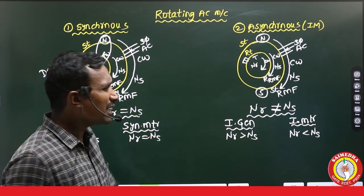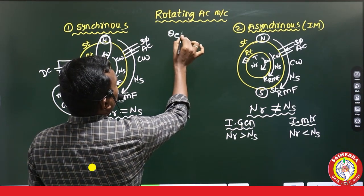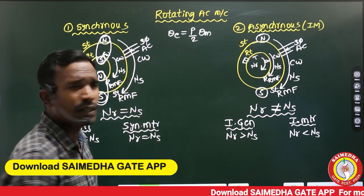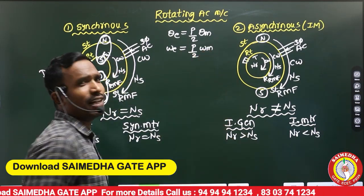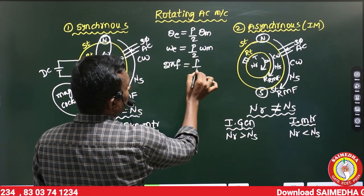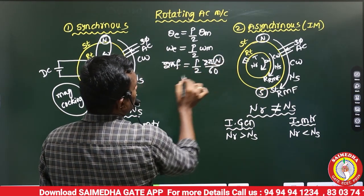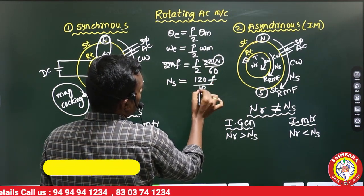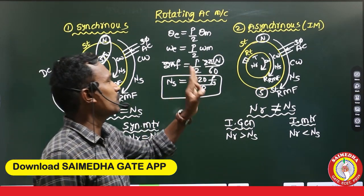What is synchronous speed actually? It is the speed of the stator magnetic field. How do we calculate synchronous speed? We have the basic formula: theta_electrical equals (P/2) times theta_mechanical. Writing in omega: omega_electrical equals (P/2) times omega_mechanical. So 2πf equals (P/2) times (2πN/60). The 2π cancels, and solving for speed: Ns equals 120f divided by P. Here, f is the stator supply frequency and Ns is the synchronous speed equal to 120f/P.